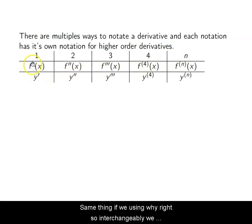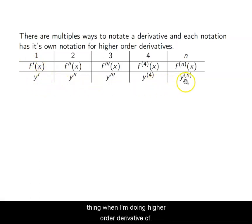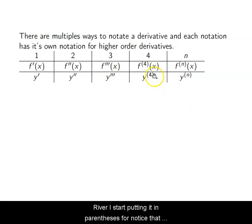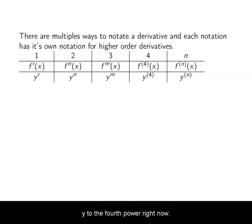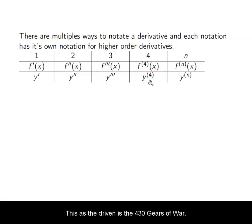The same applies if we're using y. Interchangeably, we use f prime of x or y prime. So for higher order derivatives of y as our function, after the third derivative I start putting 4 in parentheses as a superscript. The parentheses help clarify that I'm not doing y to the fourth power — since it's just an integer in parentheses, it denotes the derivative. It's the fourth derivative of y.